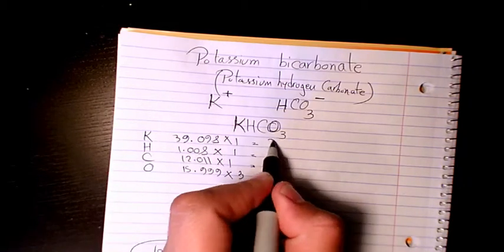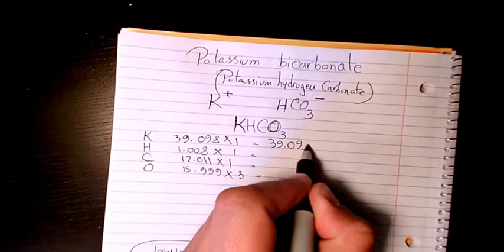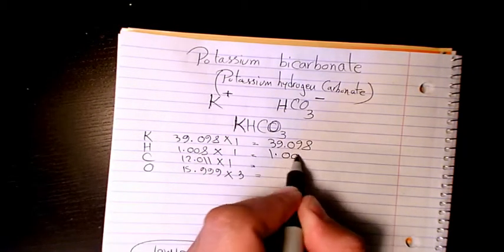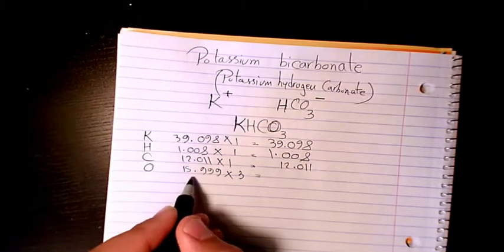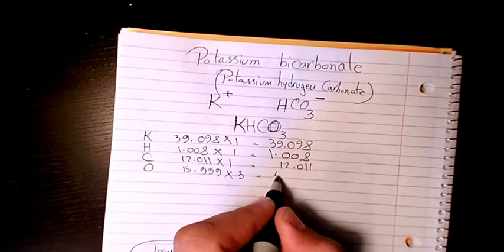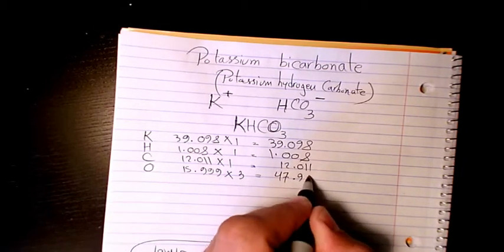So then you multiply 39.098, 1.008, 12.011, and here 47.997.